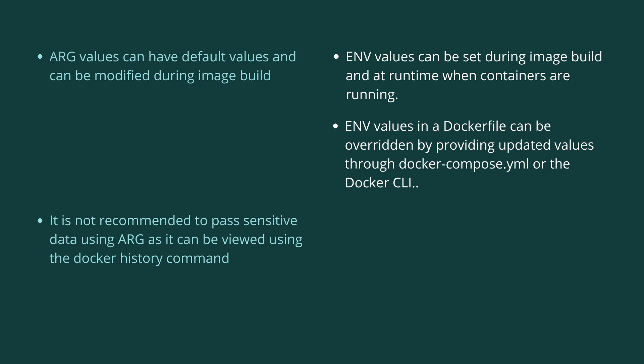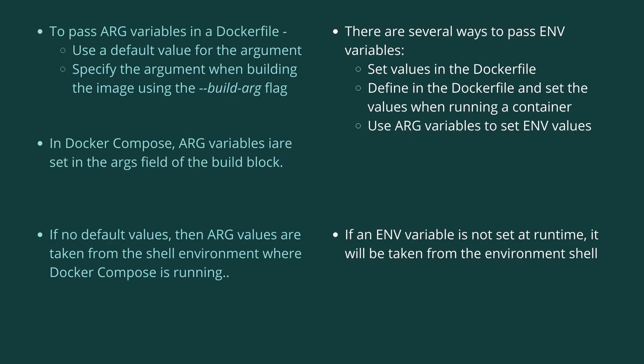To pass an ARG variable to a Dockerfile, set a default value for the argument and then specify that argument while building the image using the --build-arg flag.